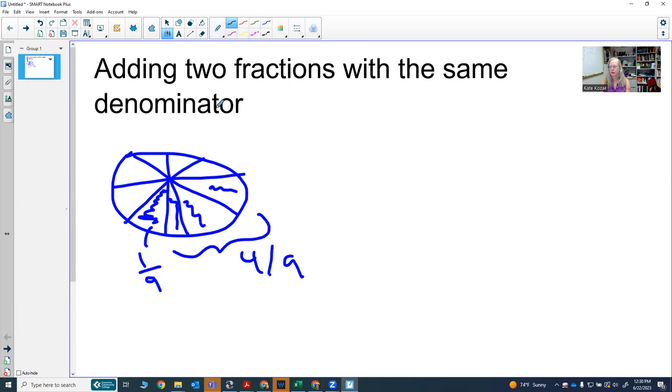If I pick two others, two of these one-ninths, I pick these two, and now I have two-ninths. Together, you're going to notice we have six-ninths. So now together, we have six-ninths of the object.